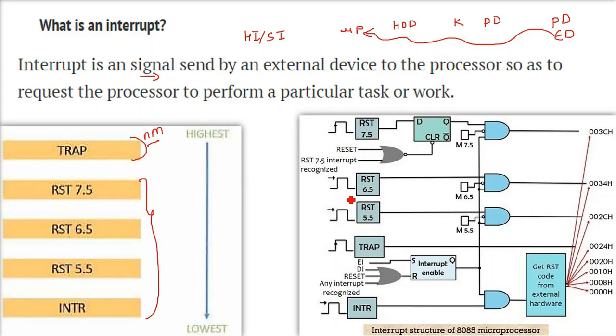So this is the formation. This is the whole interrupt structure of 8085 microprocessor. So we have interrupt enabled like this and we have trap. You can see all these RST 7.5.